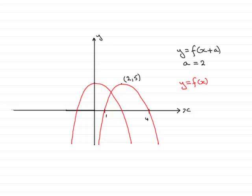So I'll just remove the old graph, and you see that this point here is at the point (0, 5). We slid the original graph two units to the left, so a was 2.